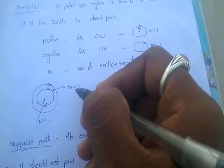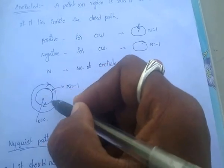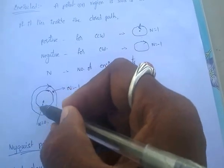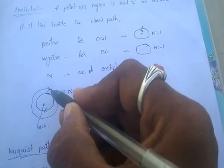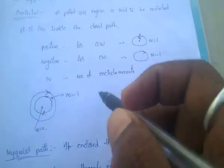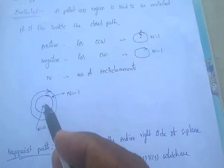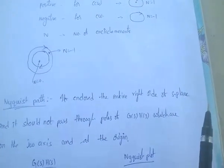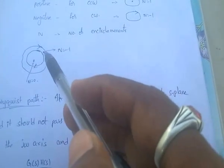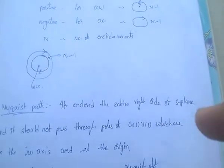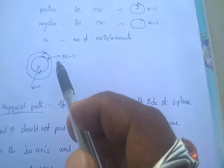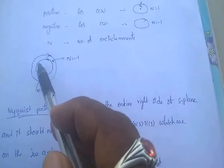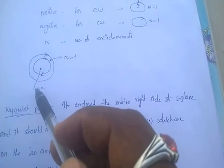For the outermost circle, a point inside in the clockwise direction means N equals minus 1. For the inner circle below, there are no encirclements, so N equals 0. For the outermost circle with one encirclement in the clockwise direction, N equals minus 1.